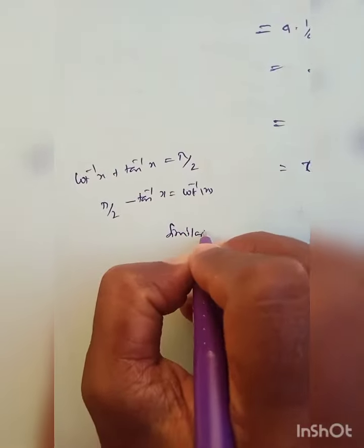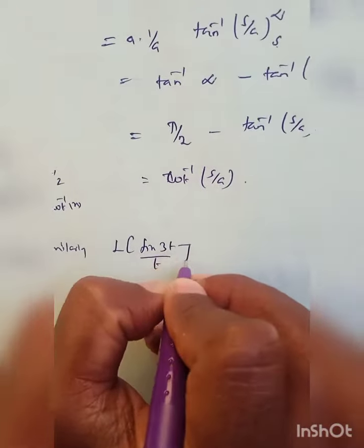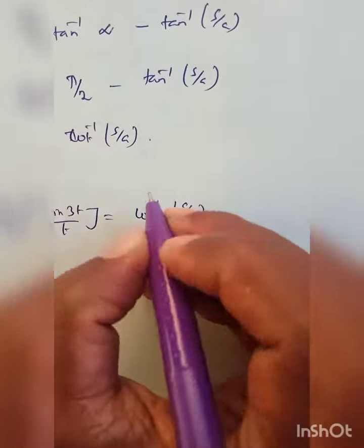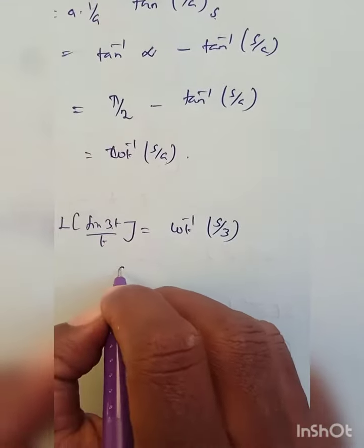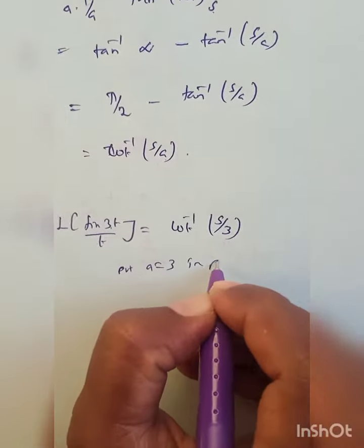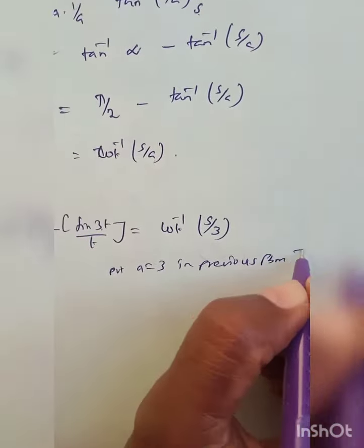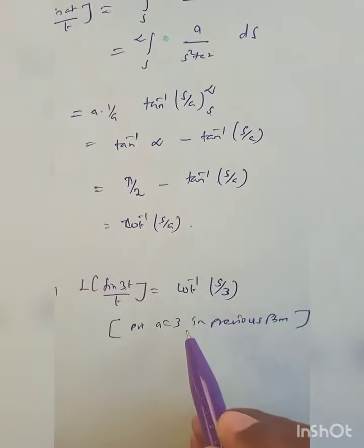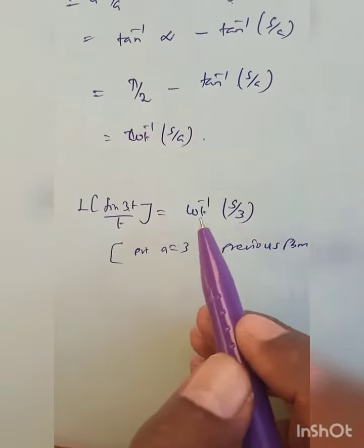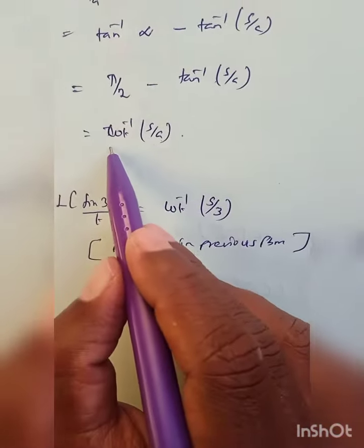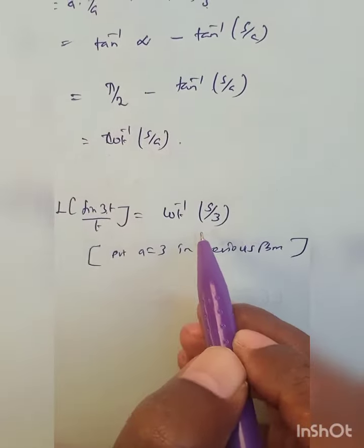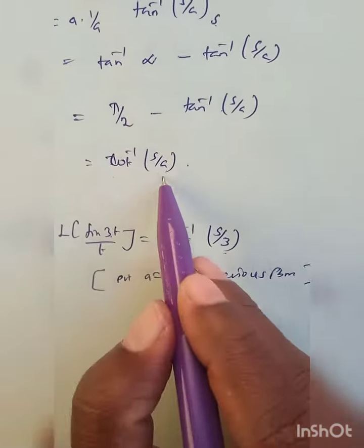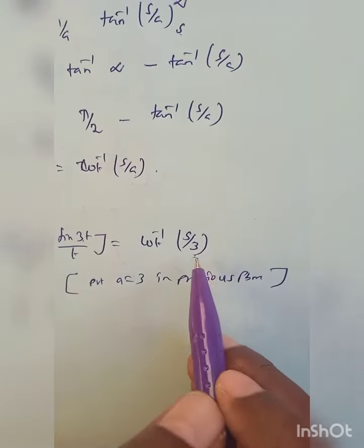Similarly, the Laplace transform of sin(3t)/t equals cot⁻¹(s/3). Here we assume a = 3, putting a = 3 in the previous result. So if you have studied one problem, you can use it to solve another. Memorize that answer and you can easily write and solve this problem. Laplace transform of sin(3t)/t equals cot⁻¹(s/3) — just replace a with 3. The problem is solved in an easy way.